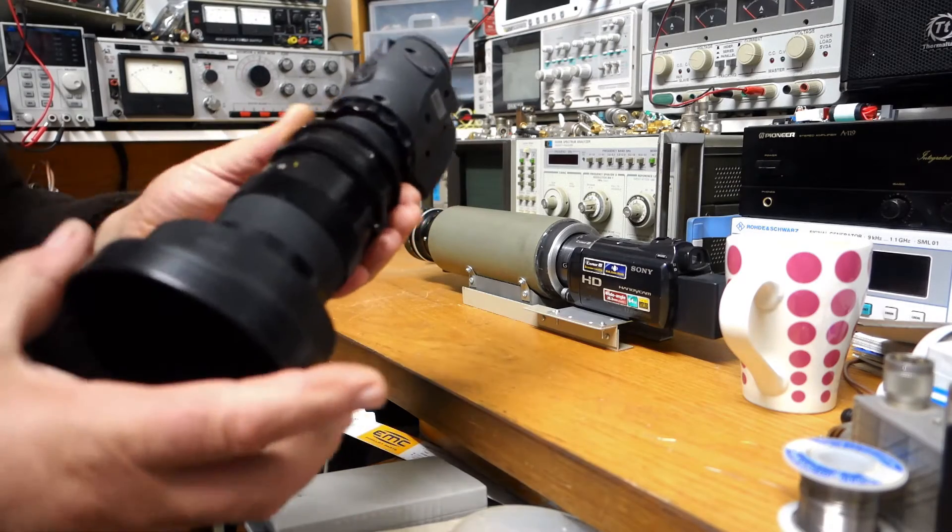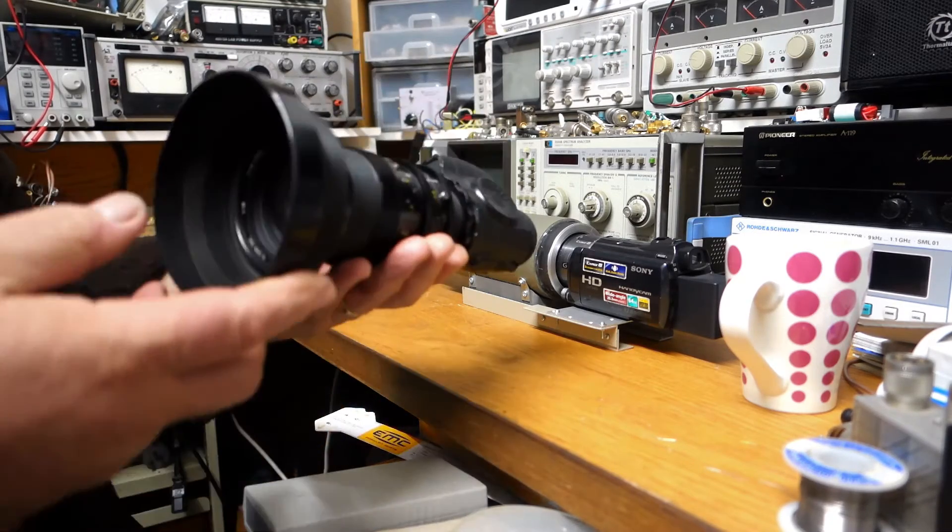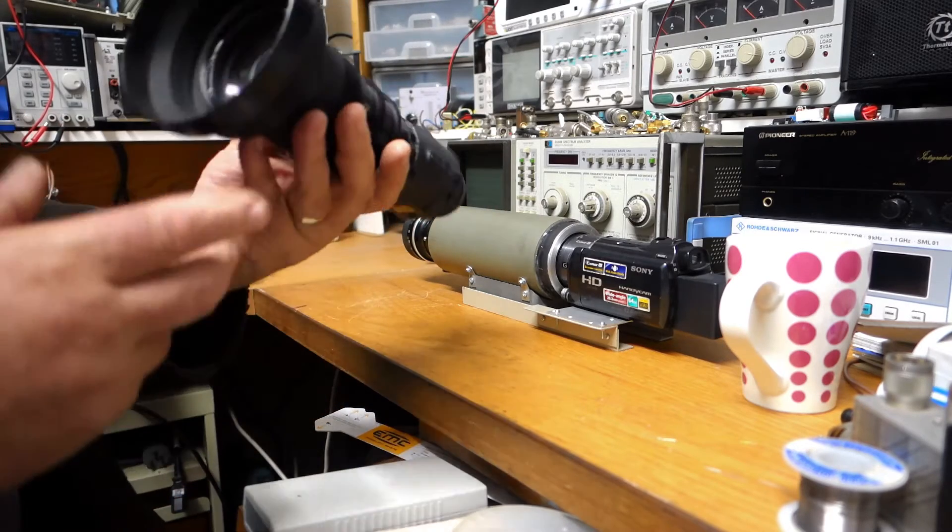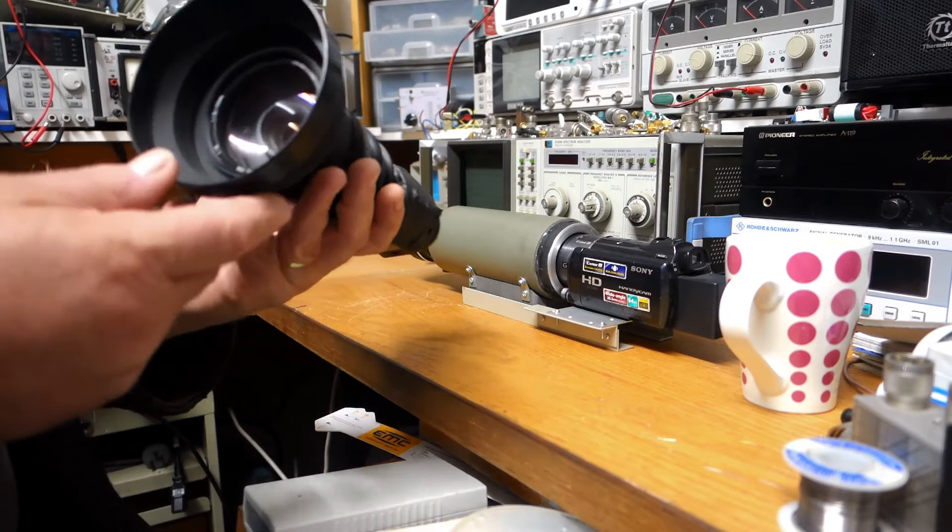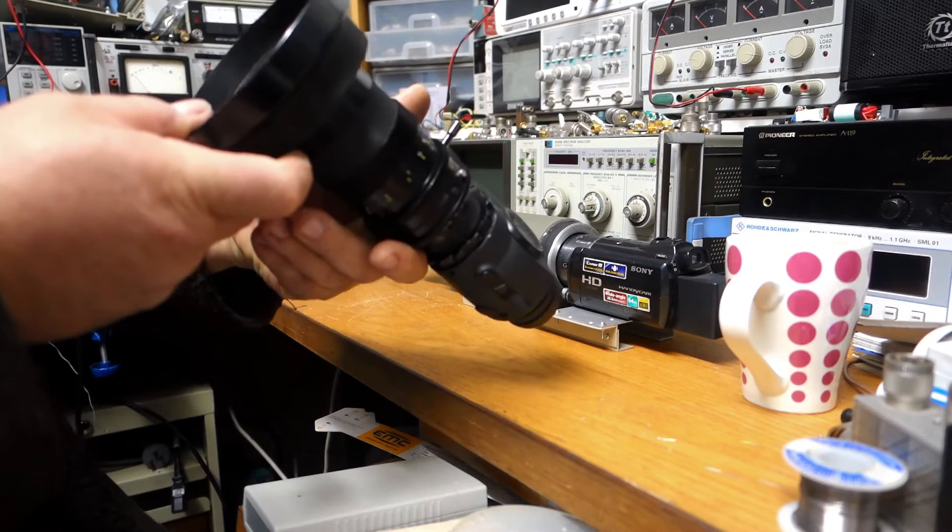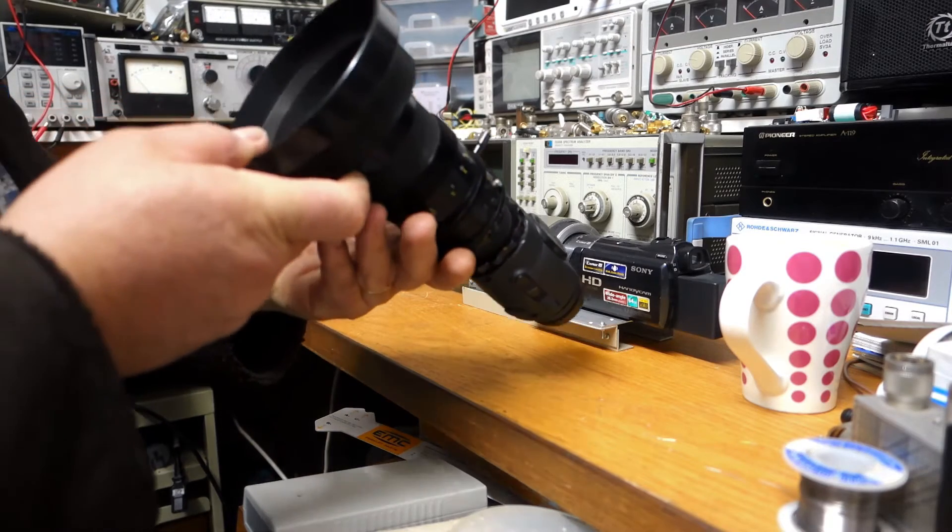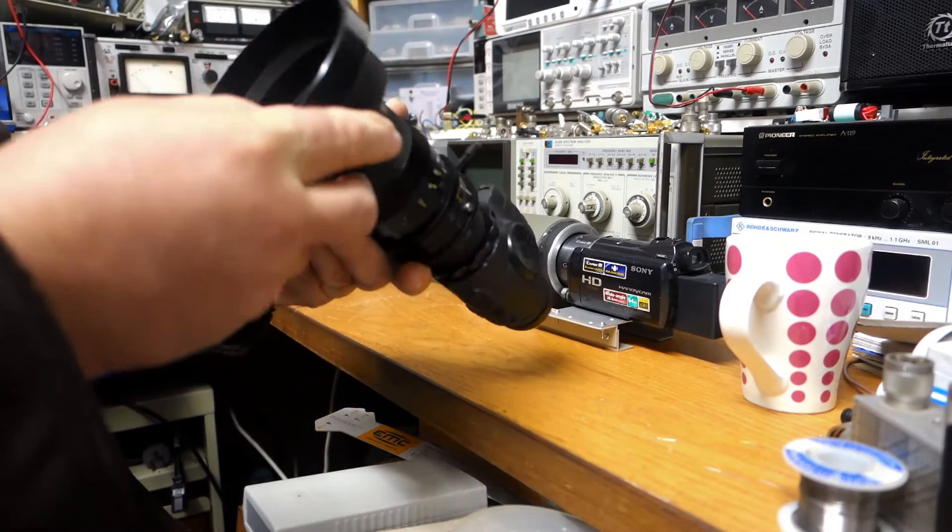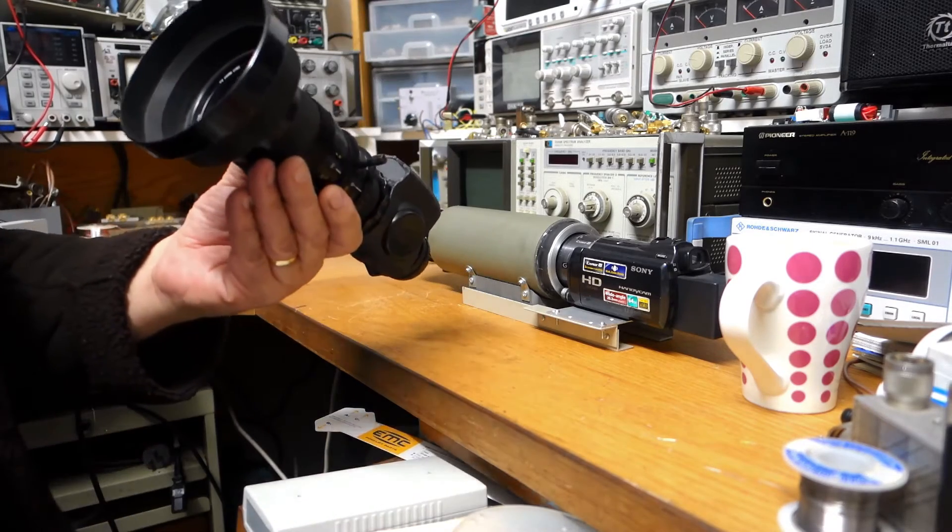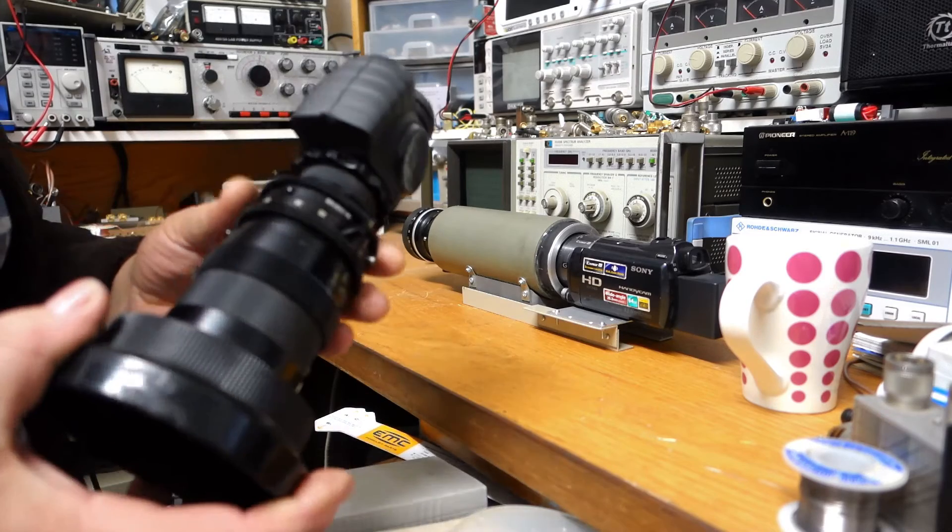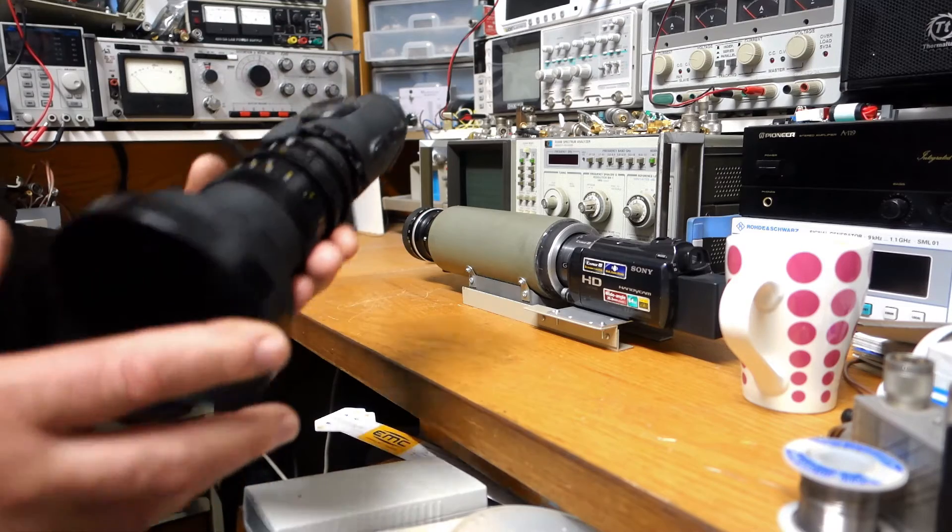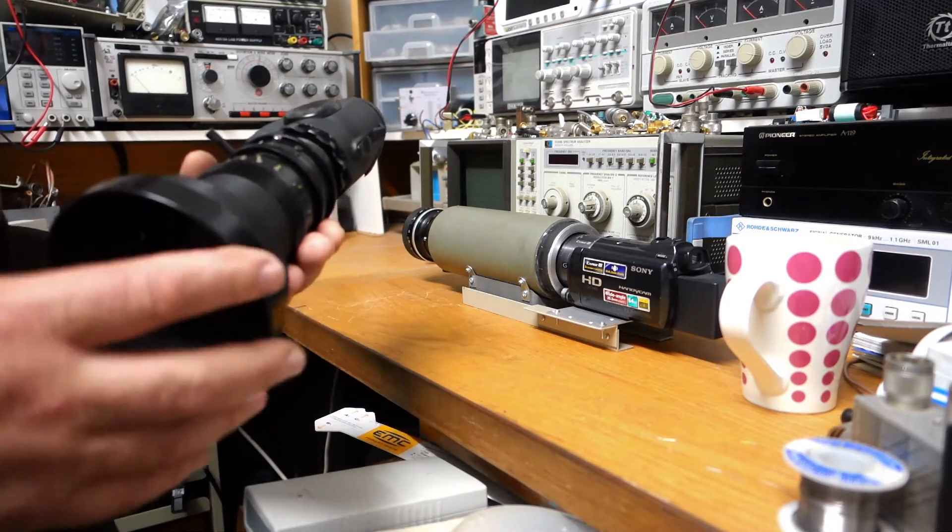I managed to find this rather interesting camera lens, video camera lens. This particular one's a Tamron lens. It's an f/10 to 100 millimeters. It says TV zoom lens and it's an f/1.6, so it's actually quite good. It lets a fair bit of light in and it's got a great wide view and quite a good zoom range as well.